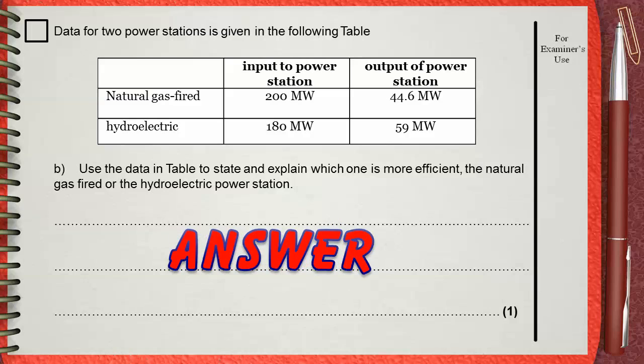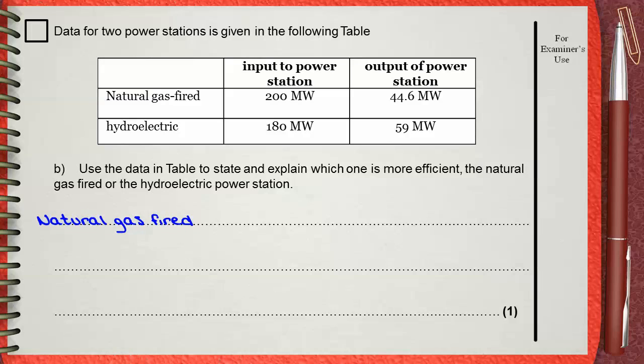Let's calculate the efficiency of both power stations. Let's start with the natural gas-fired. Efficiency will be the useful output, 44.6, divided by the total input, 200. Multiply by 100 to get a percentage. The answer will be 22.3%.